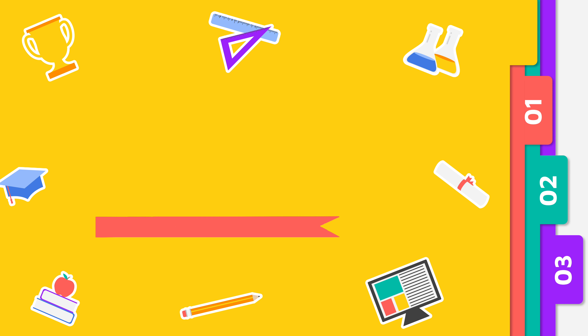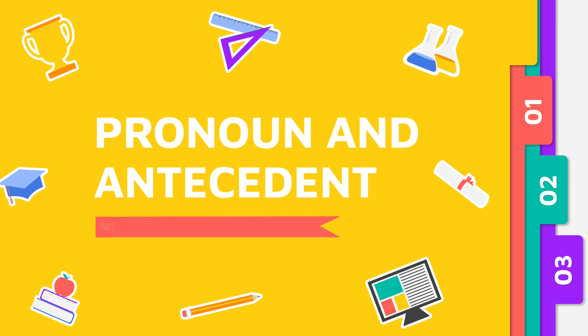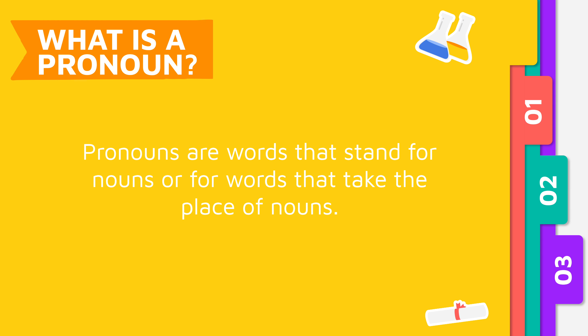Nouns name people, places, things, ideas, or feelings. However, it is awkward and unnatural to repeat the same nouns when we write sentences. To make our sentences more natural, we use pronouns instead. Pronouns are words used to replace nouns in sentences. The noun that the pronoun replaces is called the antecedent.